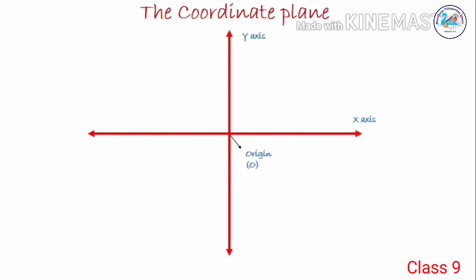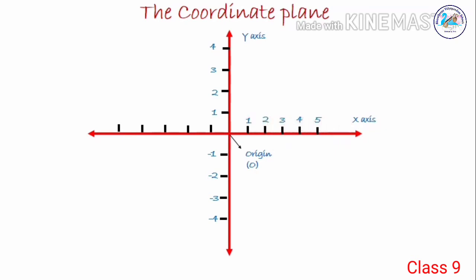We have already learned how to mark the points on these axes. On the positive direction of the y-axis, that is above the origin, we mark positive 1, 2, 3, 4, and below the origin we mark negative values: minus 1, minus 2, minus 3, minus 4 and so on. On the right side of the origin on the x-axis, we mark 1, 2, 3, 4, 5 — positive values. And on the left of the origin on the x-axis, we label the negative values: minus 1, minus 2, minus 3, minus 4, minus 5 and so on.